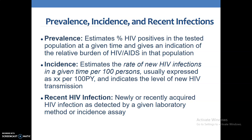Prevalence refers to the percentage of people found to be HIV positive in a tested population at a given time, and gives an indication of the relative burden of HIV and AIDS in that population. Incidence estimates the rate of new HIV infections in a given time per 100 persons, usually expressed as X per 100 persons per year.